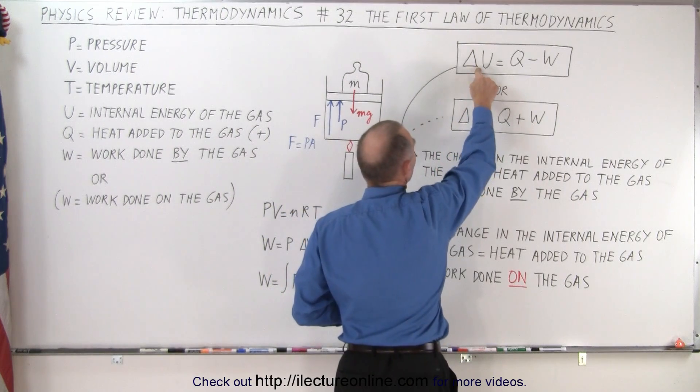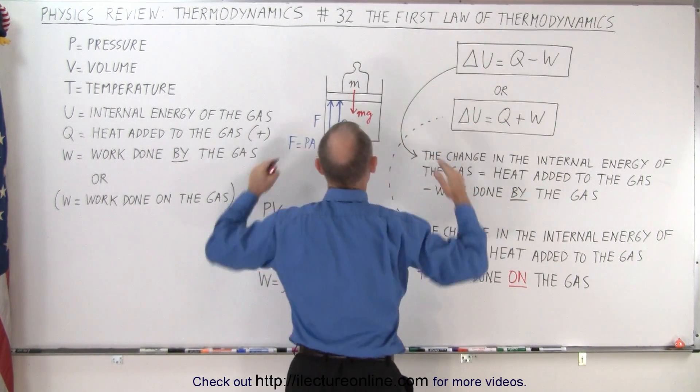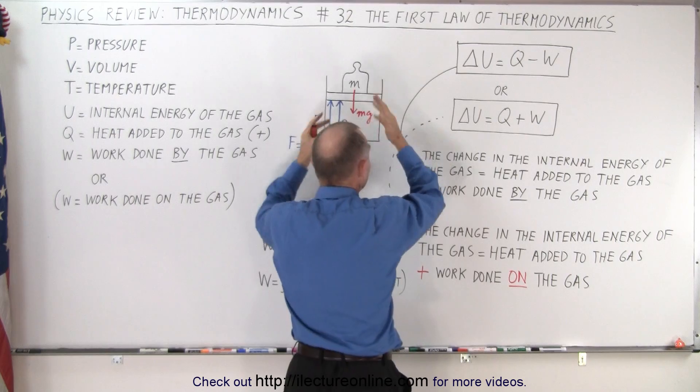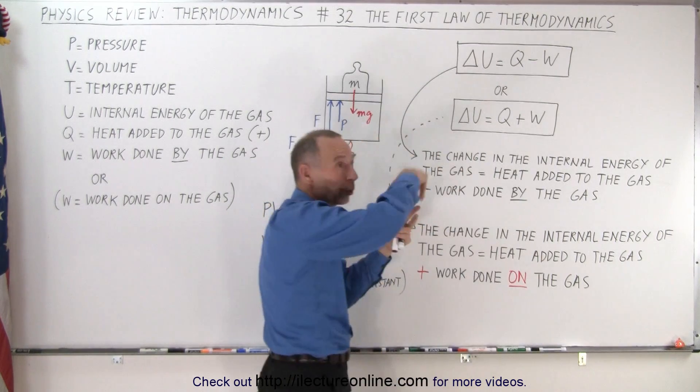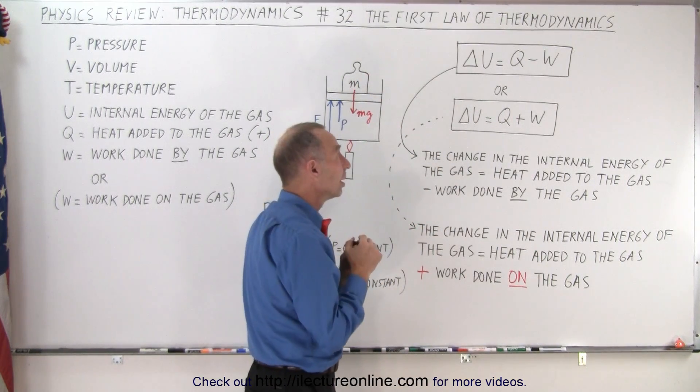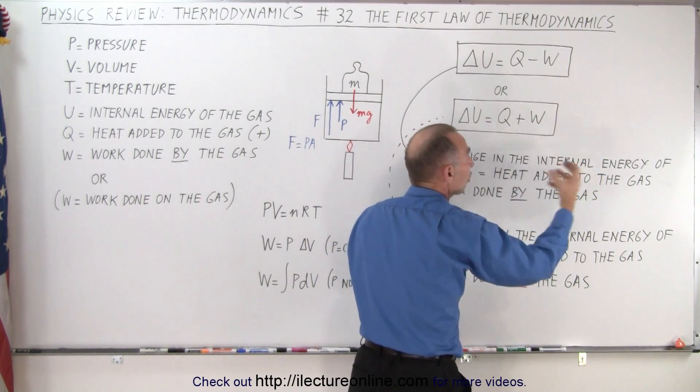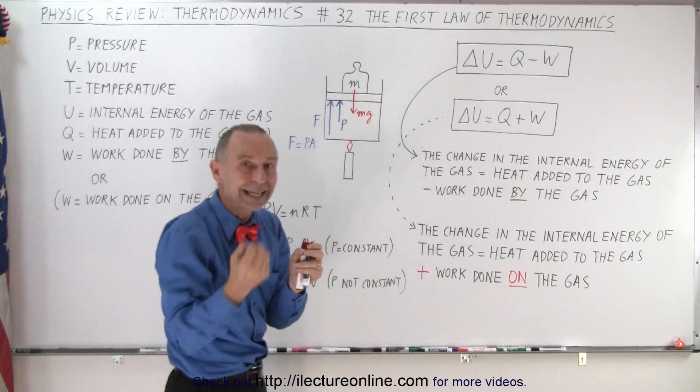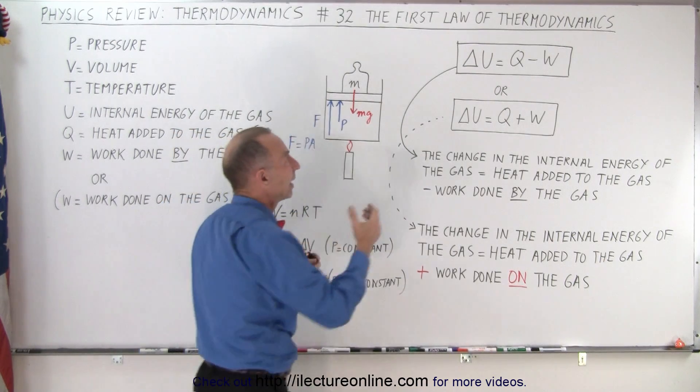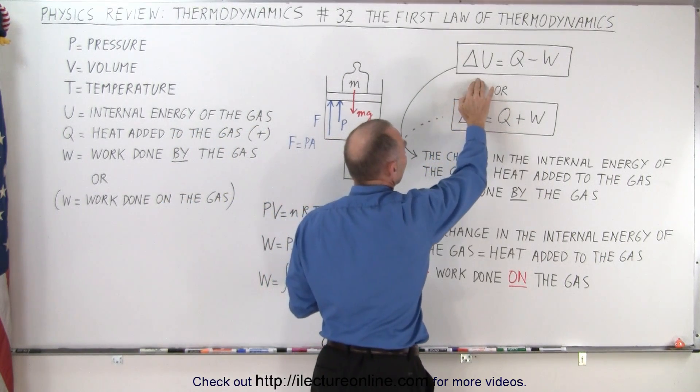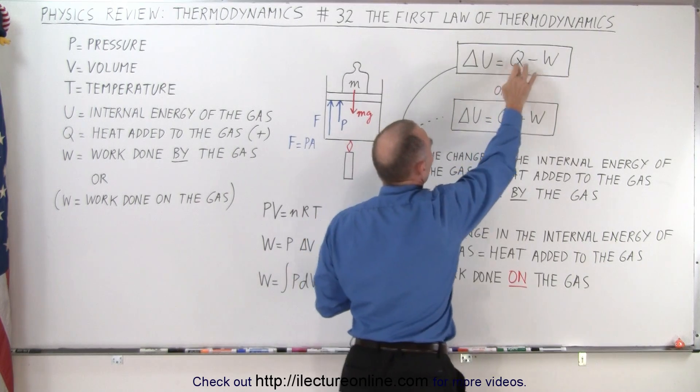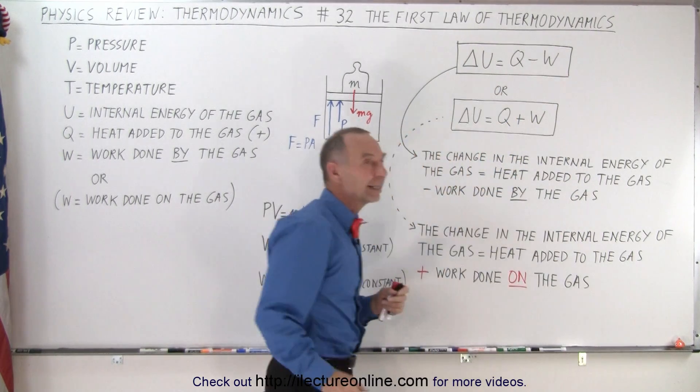Therefore, we have the change in internal energy is equal to the heat that we add to the gas. If the gas didn't do any work, all that heat would go into the gas, and that would be the change in internal energy. But since the gas also does work, some of that heat is used to do work, and so it gets removed from the gas. Therefore, the internal energy of the gas is simply heat added to the gas, minus the work done by the gas.